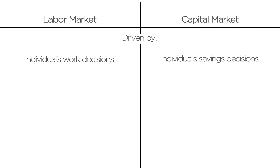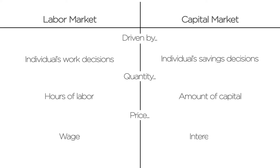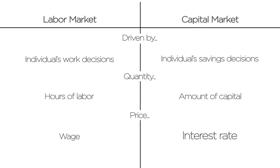The market for capital for firms looks a lot like the market for labor for firms. Firms demand some amount of capital, and individuals supply that capital. In the market for labor, the quantity was the number of hours of labor and the price was the wage. In the market for capital, the quantity is the amount of capital provided, and the price is the interest rate that has to be paid back to the lenders. If I provide a dollar of capital to a firm, the firm pays me interest on that dollar of my money. At the end of the year, I get the dollar back, plus an interest payment they give me for letting them use my dollar.